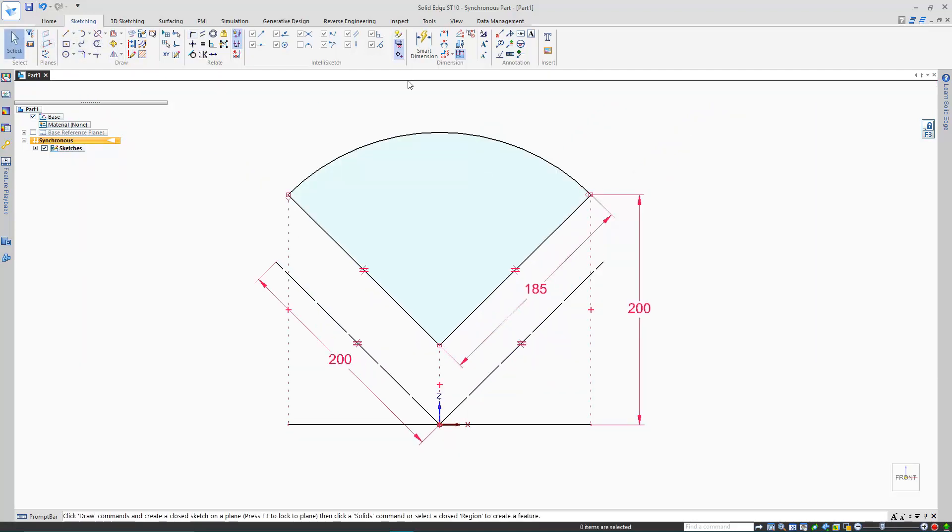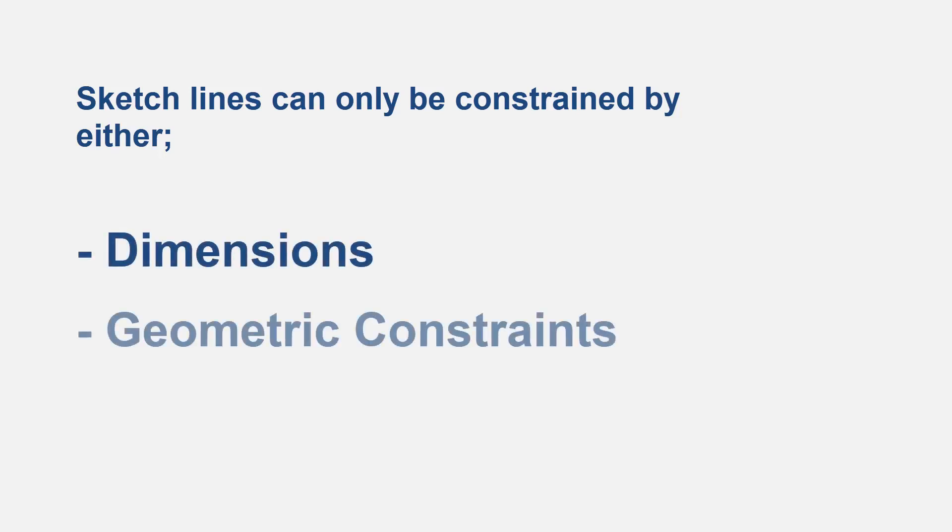If the relationship assistant button is greyed out, it means two things. You're in synchronous mode, and you're not locked onto a sketch plane. Also bear in mind that if a sketch line can't be moved for some reason, there are only two causes, a dimension or a constraint. And if it's not one, it must be the other.